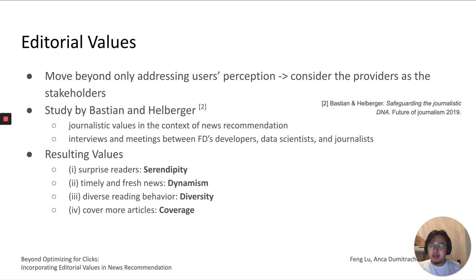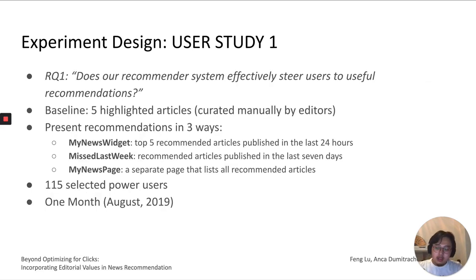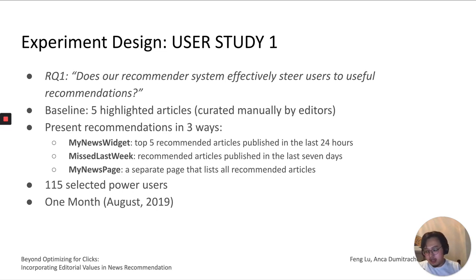As a result, we defined editorial values across four aspects: the ability to surprise users, providing timely and fresh news, yielding more diverse reading behavior, and increasing article coverage. We concluded these four aspects as four editorial values: serendipity, dynamism, diversity, and coverage. We set out to explore how our news recommender can effectively incorporate these values, and we do so by performing two user studies.